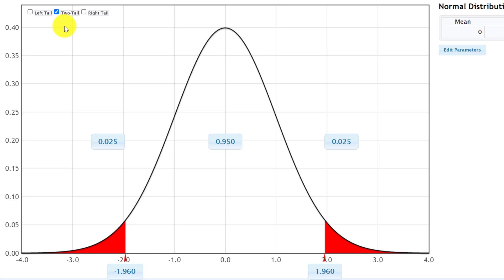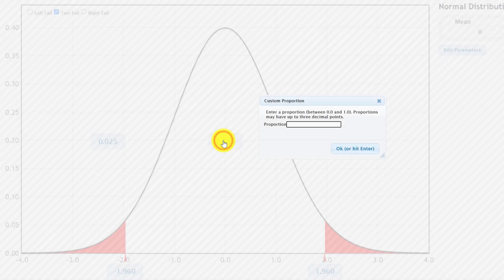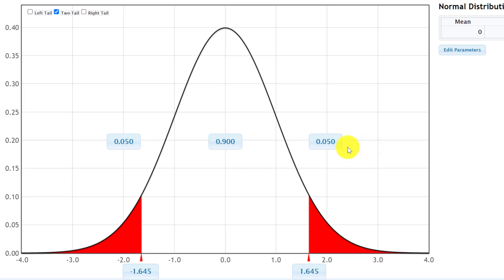Now, if we had a different alpha level, for example, if we had an alpha level of 0.10 or 10%, we could change that by adjusting any of these proportions. So if we had a 0.10 alpha level, we would have 90% in the middle and 10% split equally between the two tails. So we could click on any of these. I clicked on the middle, so I would change the middle value to 0.90, which automatically splits the remaining 10% between the left and right tails. And again, the Z critical values are here at the bottom.